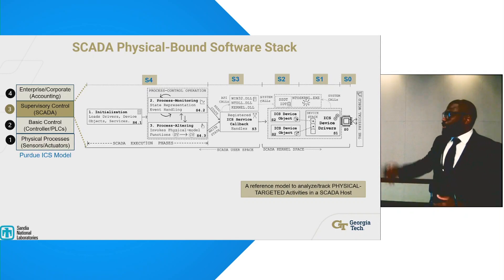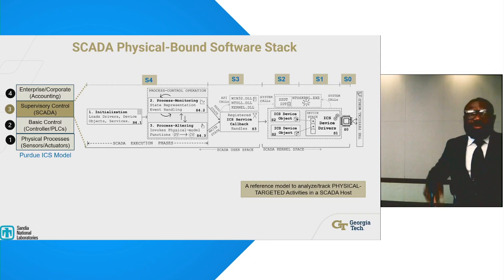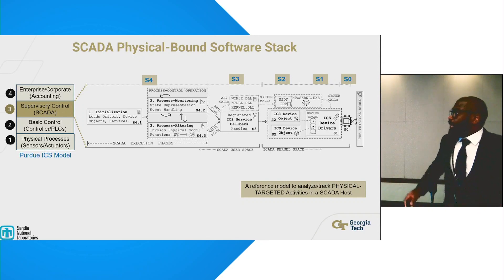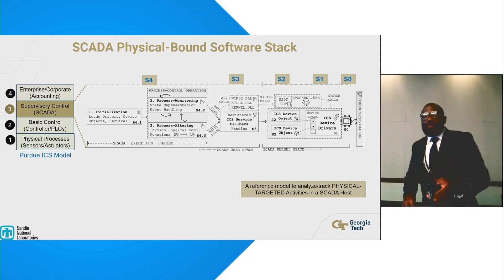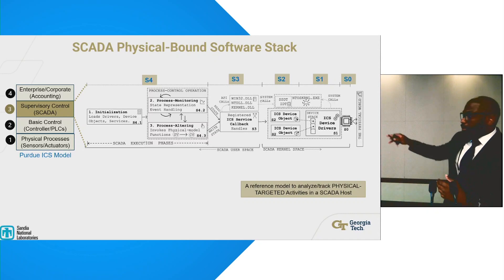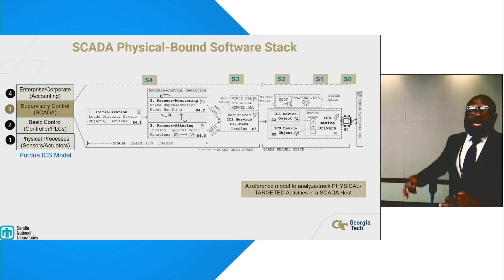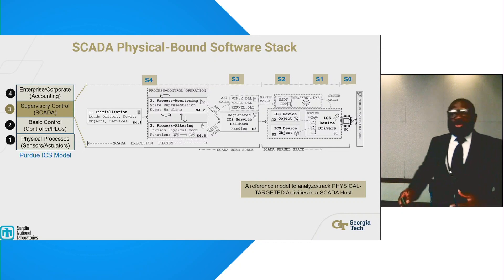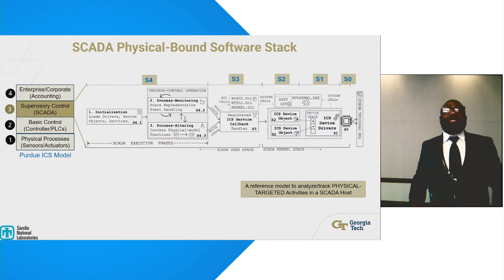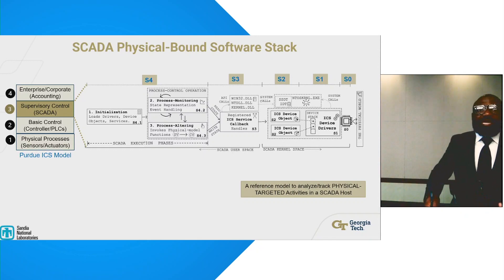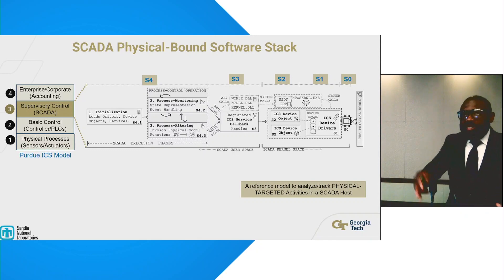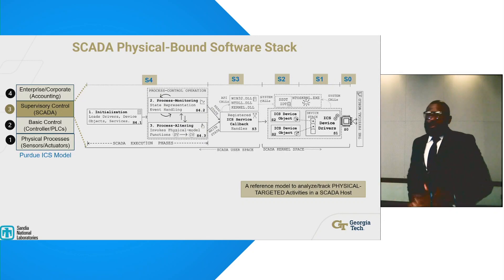From S4 to S0, we identify the different types of system interactions that SCADA is having with the operating system. S4 covers the actual SCADA application going from initialization to process control. S3 is the SCADA system obtaining a software handle to the physical world — the PLC on layer 2. S2 to S0 covers what happens in kernel space. This analysis allows you to build a SCADA-specific IDS by tracking the attacker's activities as it tries to make its way toward the physical world.